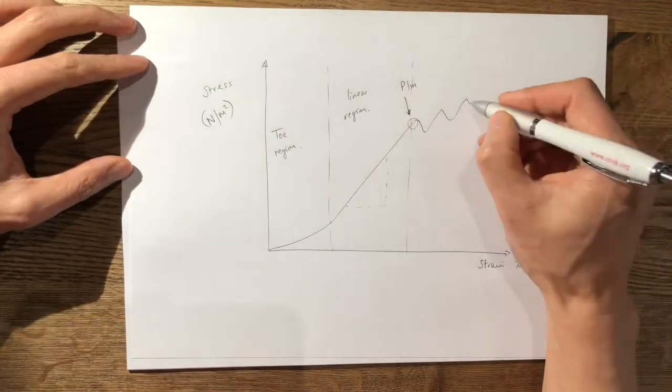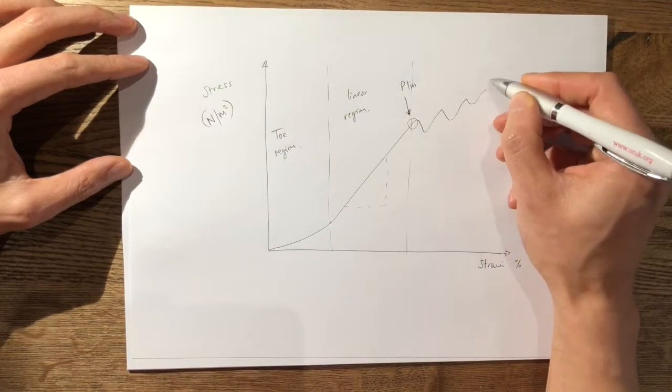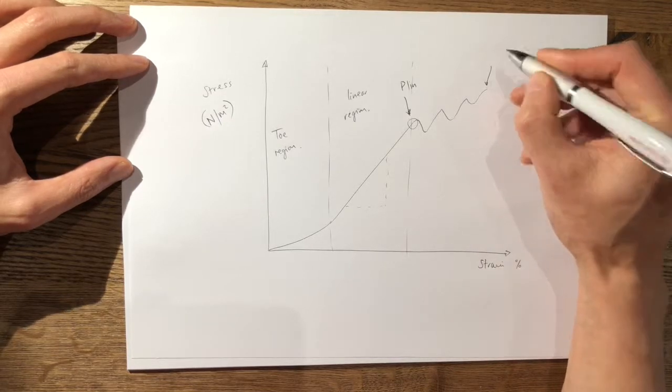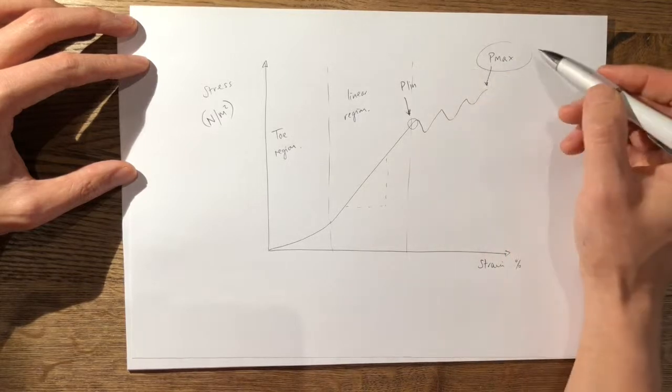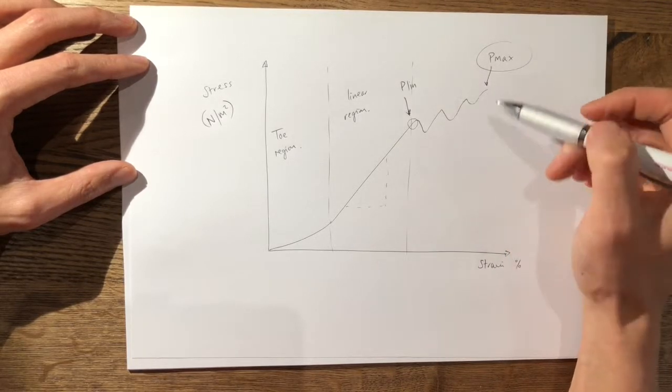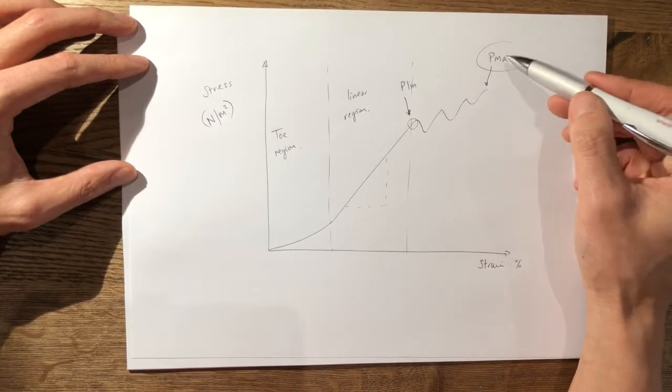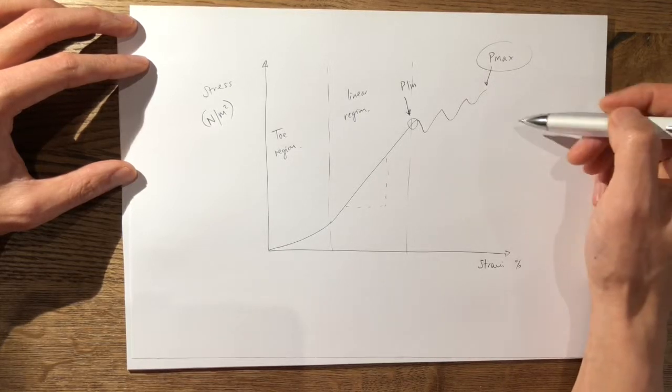So this happens all the way up to the highest point of the curve where it's known as P-max which is the maximum amount of stress that the tendon can withstand.